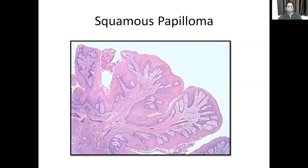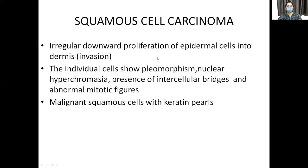Now, squamous cell carcinoma: the skin contains stratified squamous epithelium over the epidermis, papillary dermis, reticular dermis, and underlying fat. In squamous cell carcinoma, abnormal mutations lead to proliferation of undifferentiated or poorly differentiated cells, with tumors that may recapitulate keratin production. The cells are not uniform — the nucleus-to-cytoplasm ratio is not maintained, cells are large and irregular, and the normal stratification is lost.